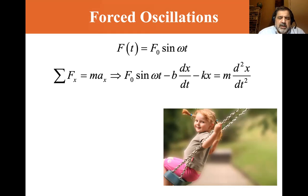Now if we do a similar thing that we did with the damped oscillations, sum of the forces in the x direction is equal to max. So you get F0 sine omega t, which we get from the equation above, minus b.